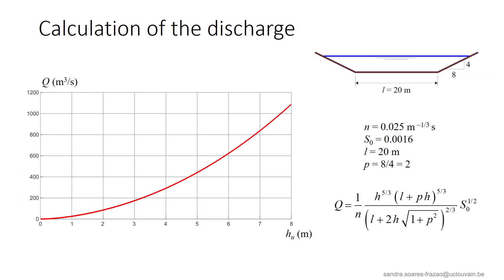In general, the bed slope S0 is known, as well as the slope of the banks and the friction coefficient. So, applying the uniform flow equations to the trapezoidal channel, we can easily calculate the discharge as a function of the depth, which is called the uniform depth and denoted Hu.